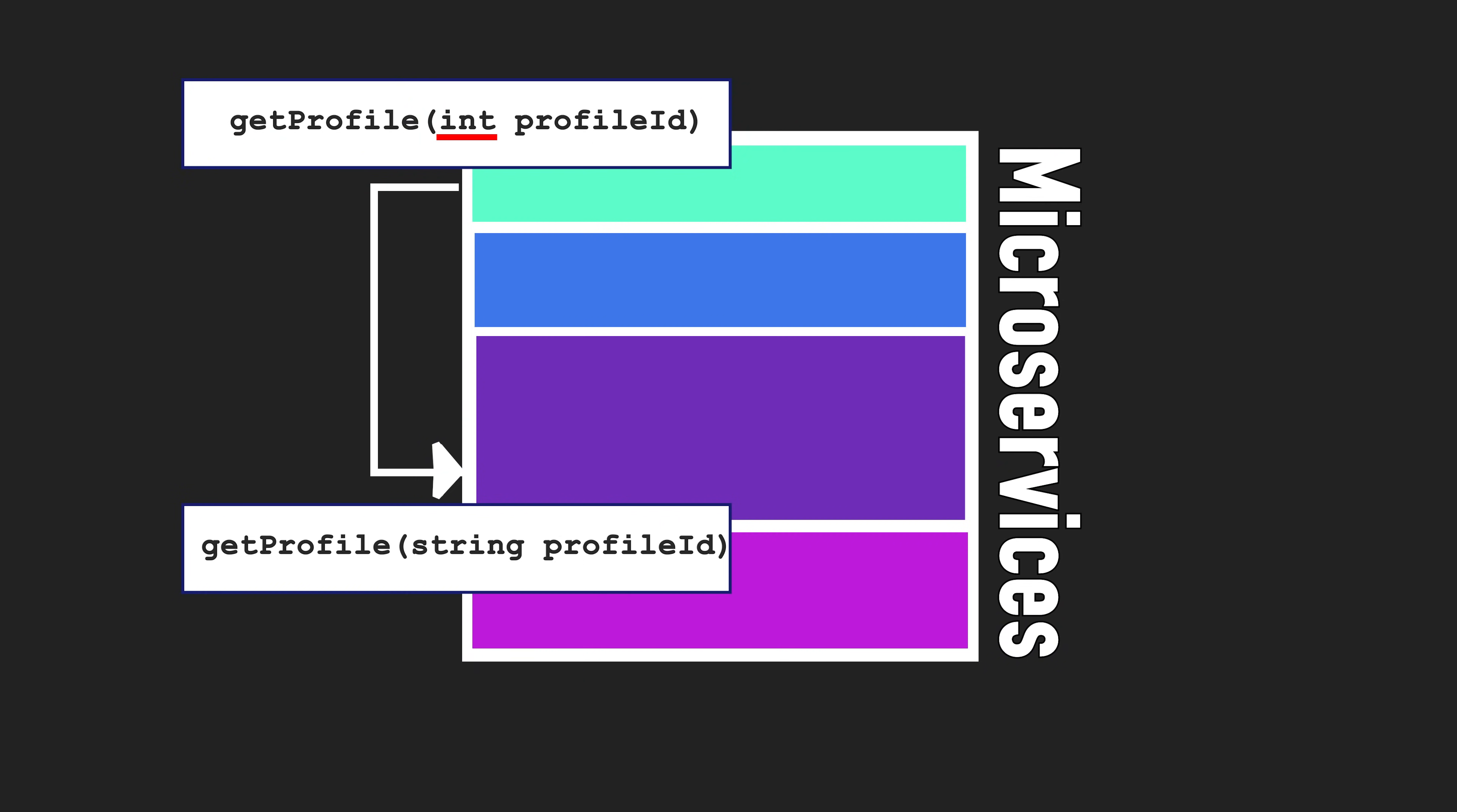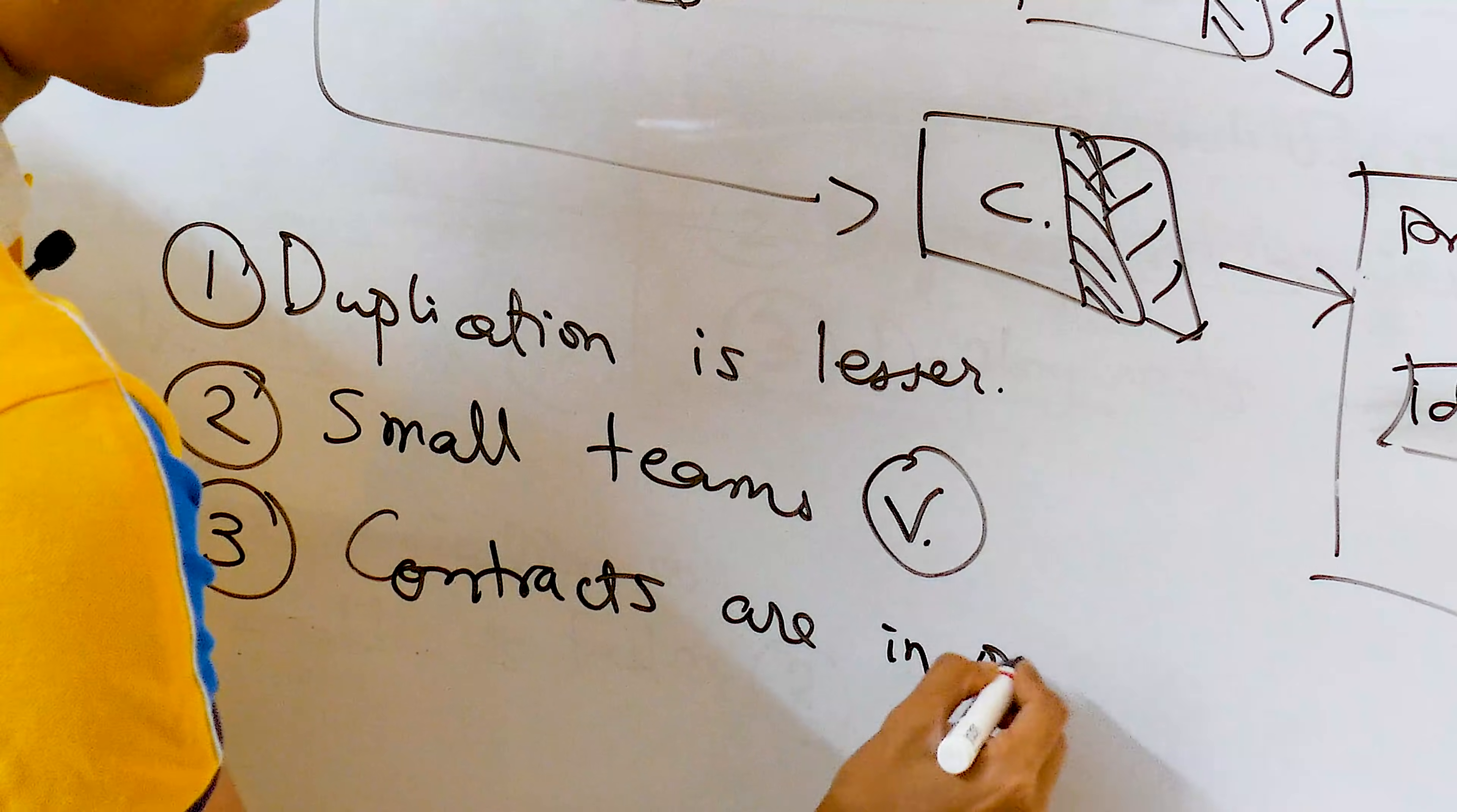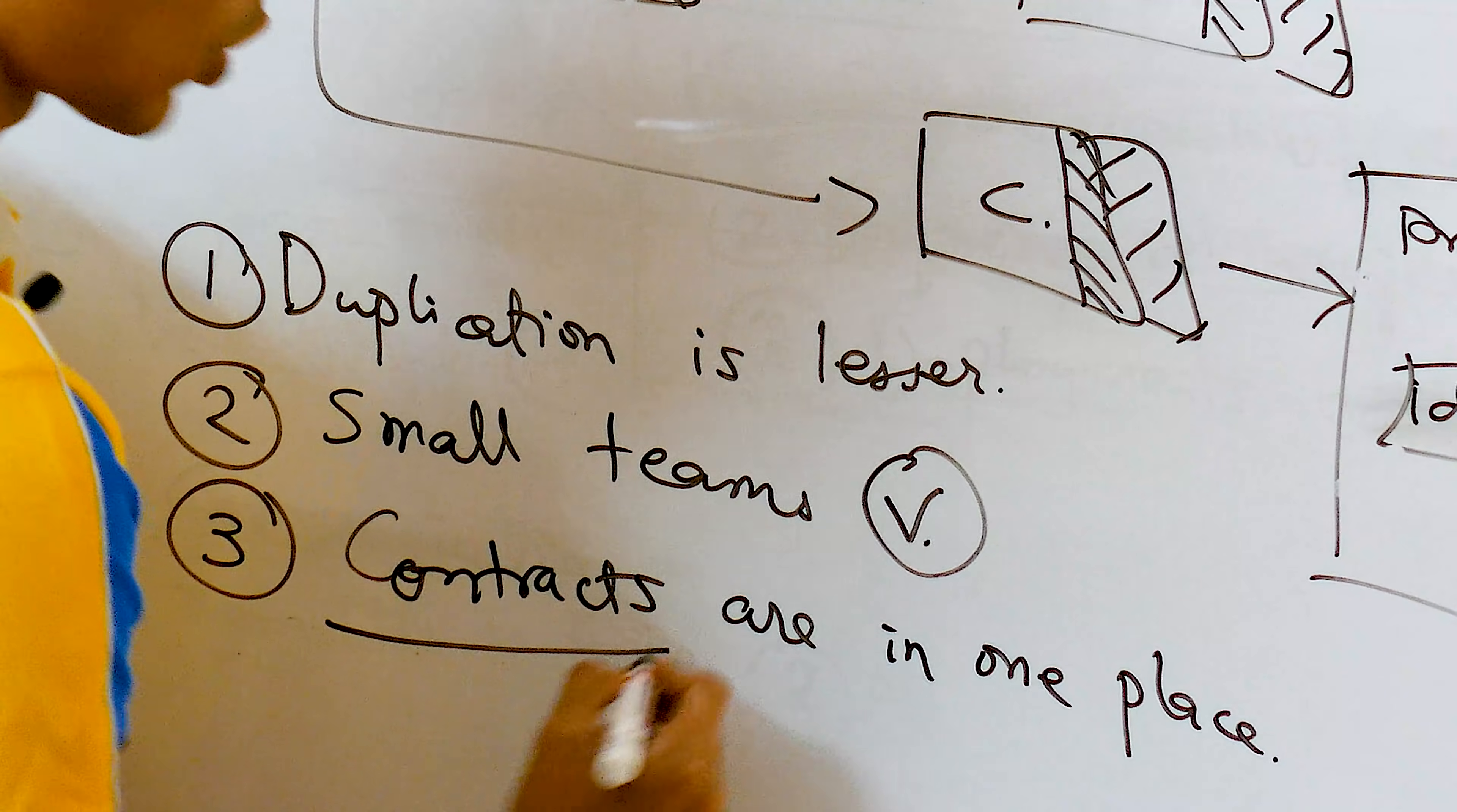So in microservices, it's much easier to have breaking changes, which is bad. While in monoliths, because the code and therefore the expectations are in one place, it's much harder to have these kinds of problems. The contracts are in one place. These are the service contracts.